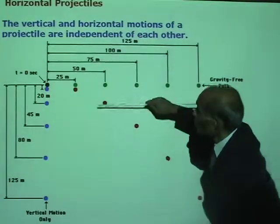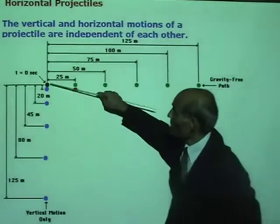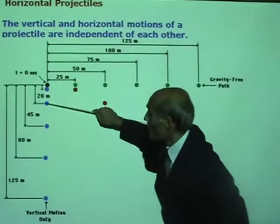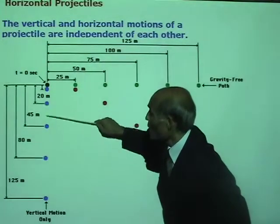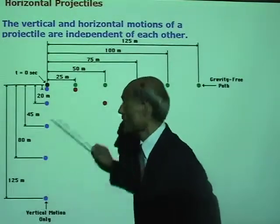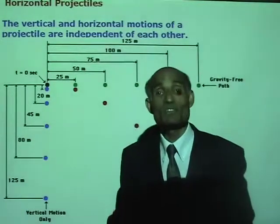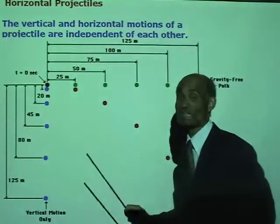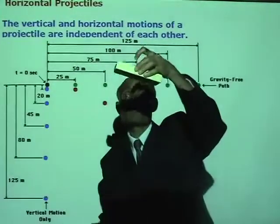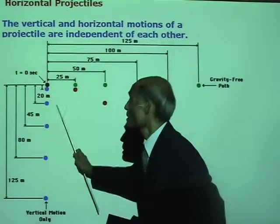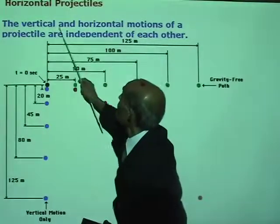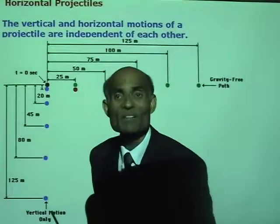Whereas the vertical motion keeps accelerating — in the first second it travels a small amount, in the second second a lot more, in the third second even more. There is an acceleration downward: the acceleration due to gravity. The vertical motion of this ball is the same as if the ball were simply dropped. The vertical motion does not know there is a horizontal motion — vertical and horizontal motions are independent of each other.